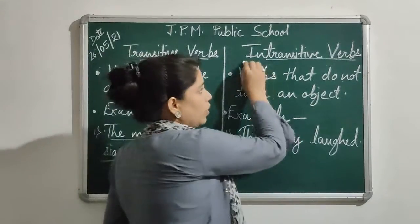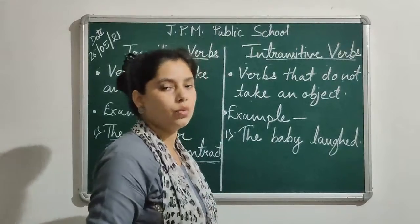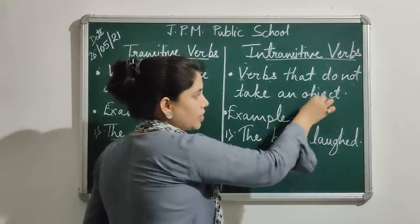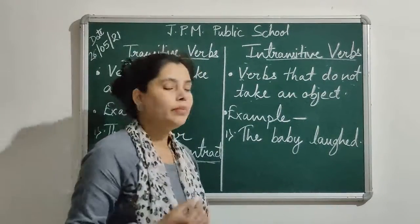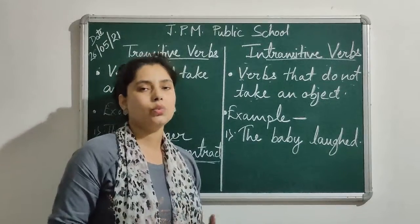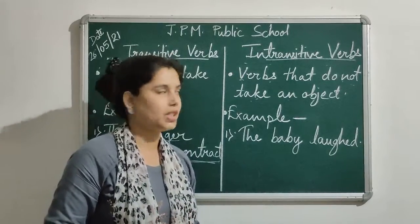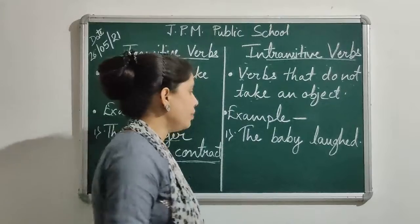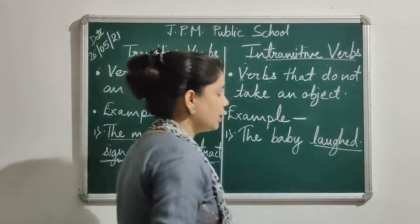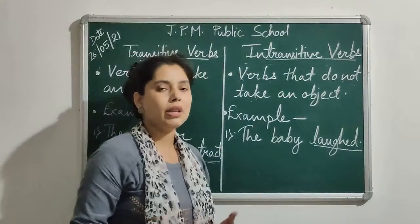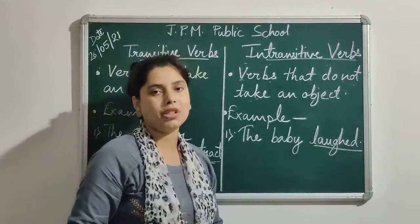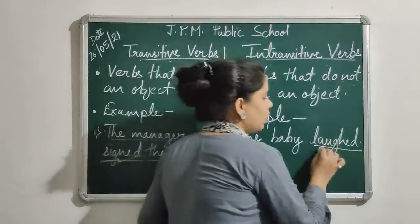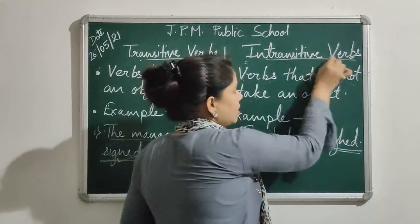Now we will talk about intransitive verbs. What are intransitive verbs? Dear students, intransitive verbs are the verbs that do not take an object to complete their meaning. The meaning of the sentence is clear without the requirement of an object when we use these kinds of verbs. For example, 'The baby laughed.' The meaning is clear; it does not require any object. So this verb is an intransitive verb.